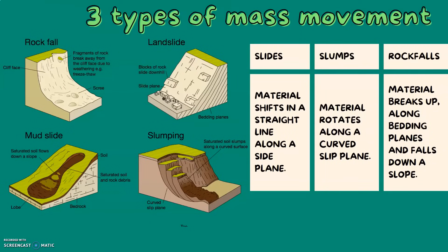There are three types of mass movement: sliding, slumping, and rockfall. Sliding is when materials shift in a straight line along the slide plane. Slumping is when material rotates along a curved slip plane. And rockfall is when material breaks up along bedding planes and falls down a slope.